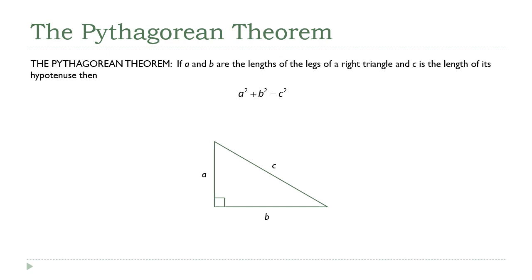It says that if we have a right triangle — and I want to emphasize this is only true in a right triangle, not just any triangle — and we know the lengths of the legs, that's a and b, and we know the length of the hypotenuse, that's c, then those three numbers have to satisfy this very familiar equation: a squared plus b squared equals c squared.